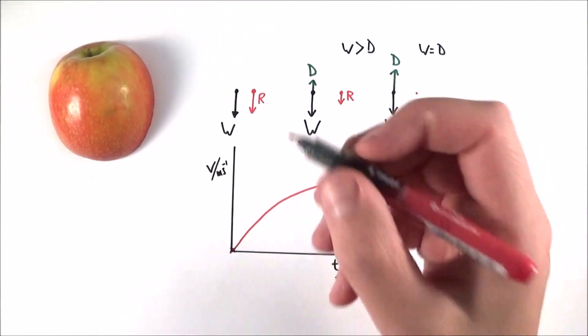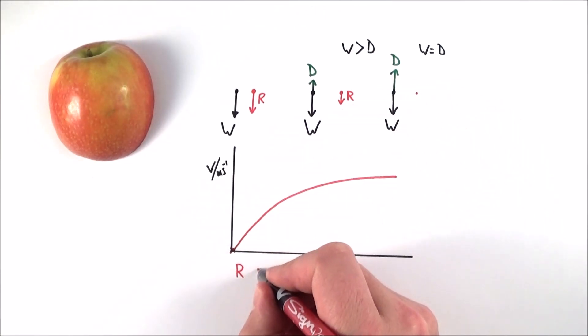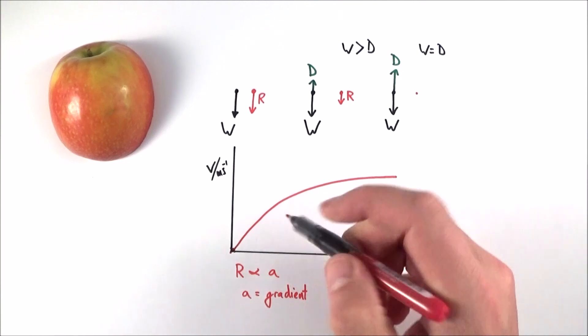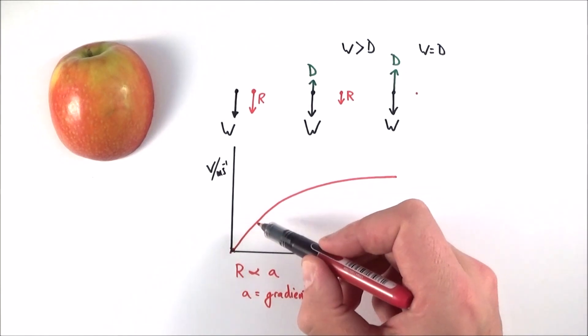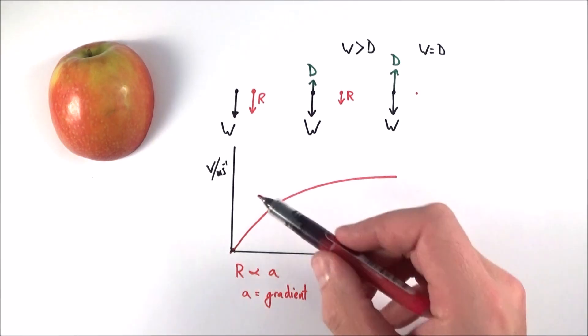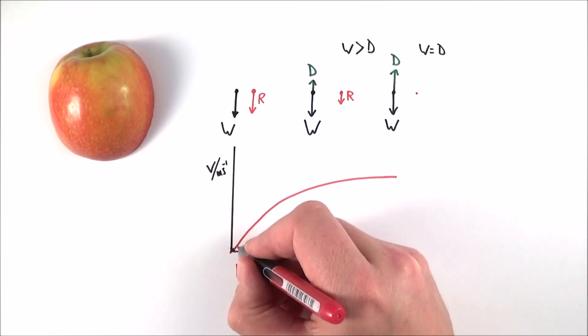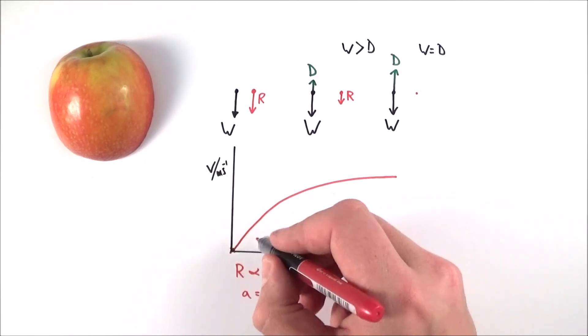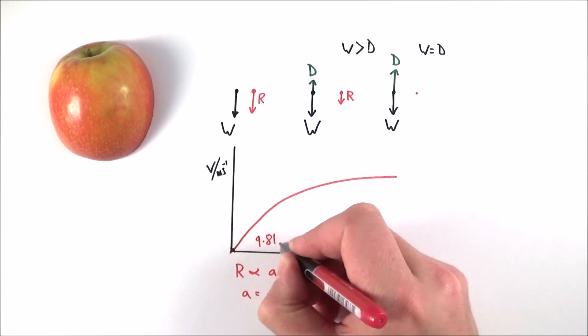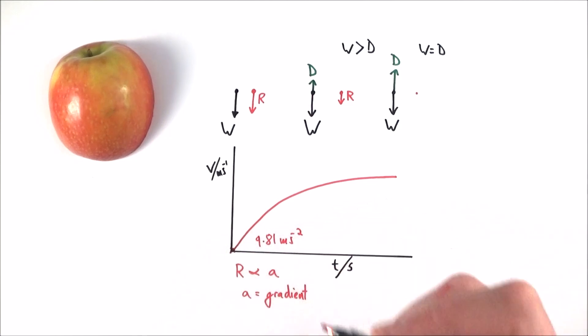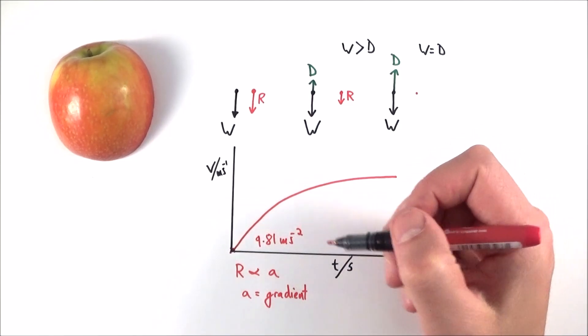Now the important thing to note is that because the resultant force is going to be proportional to the acceleration of that object, and the acceleration on a v-t graph is equal to the gradient at any point, then we can basically look at the steepness of the gradient here and see how that relates to our resultant force. So initially we have a steep gradient, and actually if we were to measure this at this kind of stage here, the gradient would be equal to a value of about 9.81 meters per second squared, which is acceleration g due to gravity.